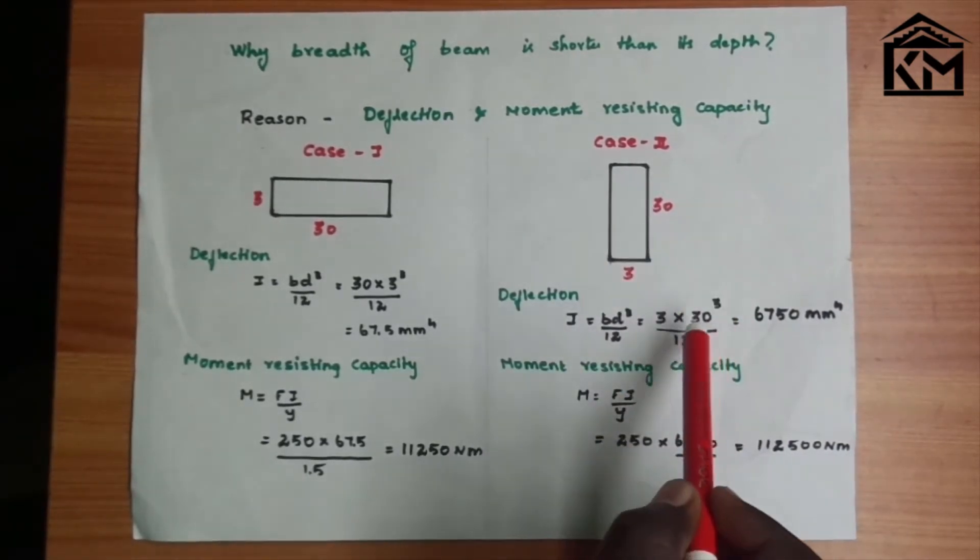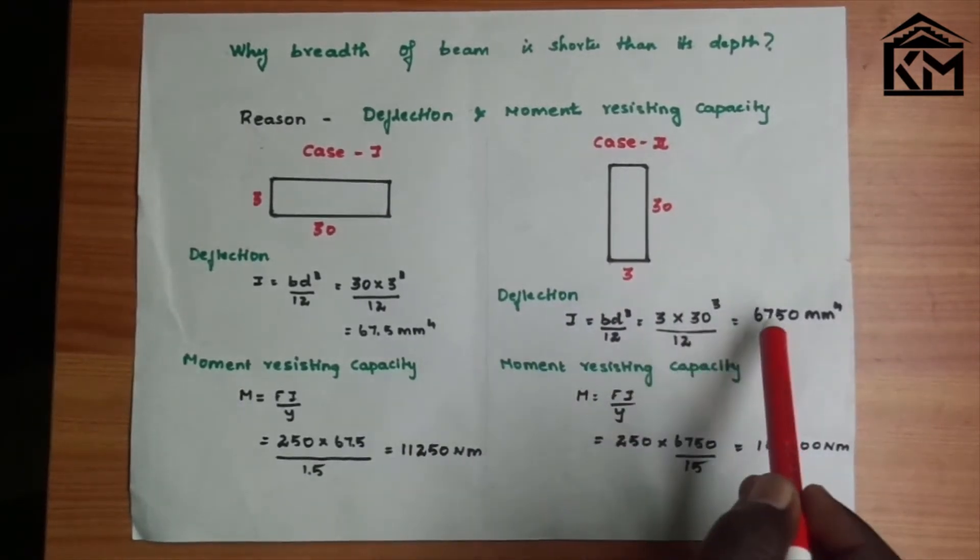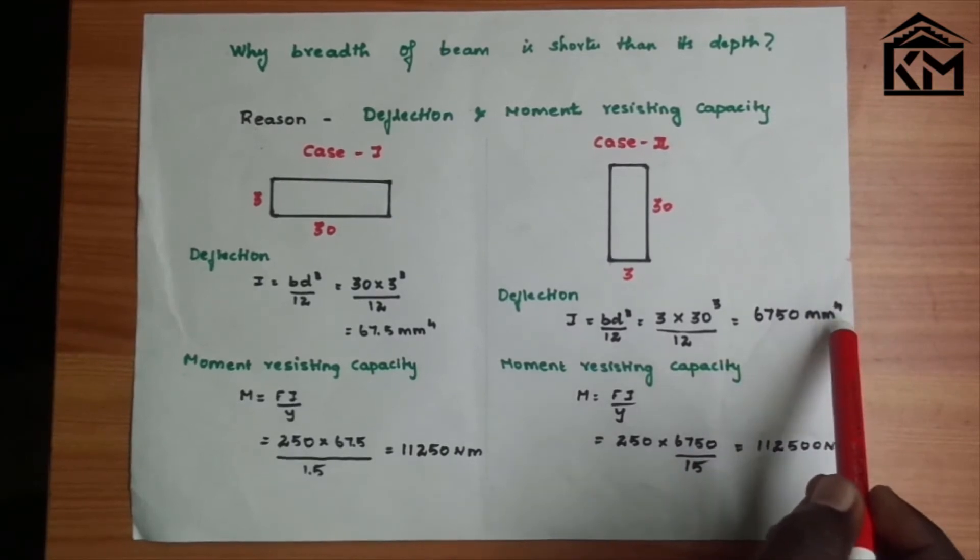When you derive, now the depth is 30. Using the formula like this, we get 6075 mm to the power 4.